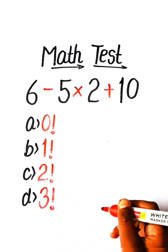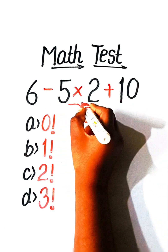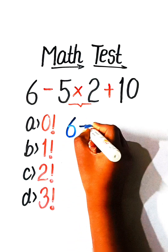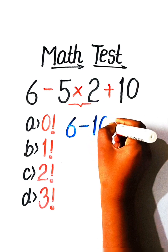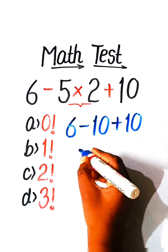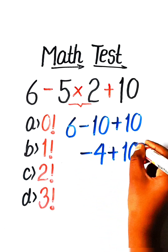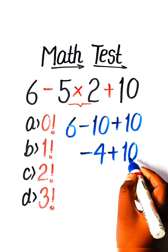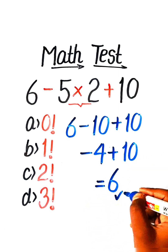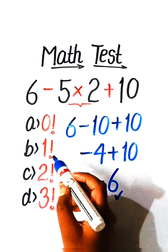So let's solve this. First we have to multiply, so we will write here: 6 minus 5 twos are 10, plus 10. 6 minus 10 is minus 4, plus 10. We have a plus sign with the greater number, so we will write here 6 — that will be our correct answer.